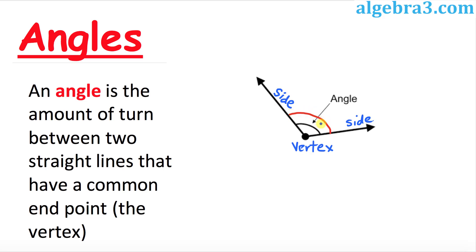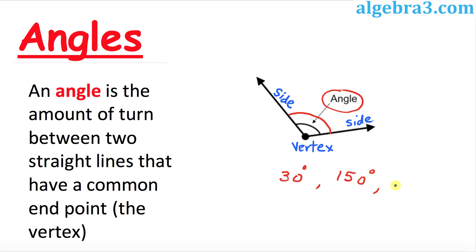This turn in between these two sides is called an angle. An angle can be represented by values such as 30 degrees, 150 degrees, or even negative 10 degrees, and so on.